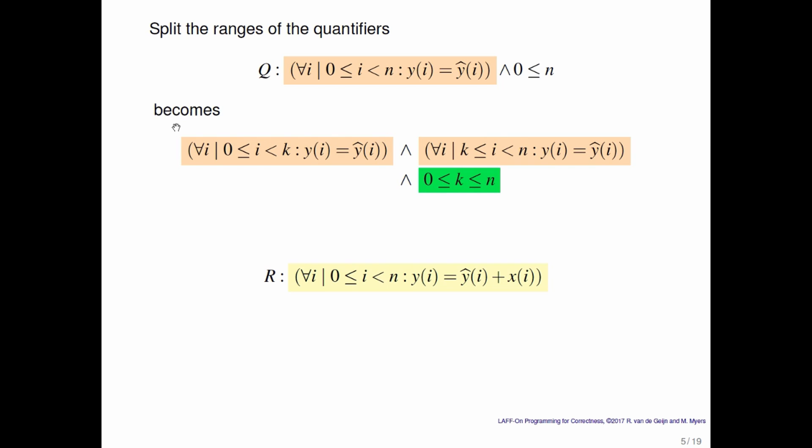So let's use that index k to split the range. Here we have taken the precondition and we've split it into two quantifiers, one that says the first k entries in the array equal the original contents, and the second one says the remainder of the array also contains its original contents. And the box highlighted here in green is necessary to make sure that in the quantifications you only access entries that are actually part of the array. Remember these are arrays that are indexed from 0 to n minus 1 because there are n entries in the arrays.